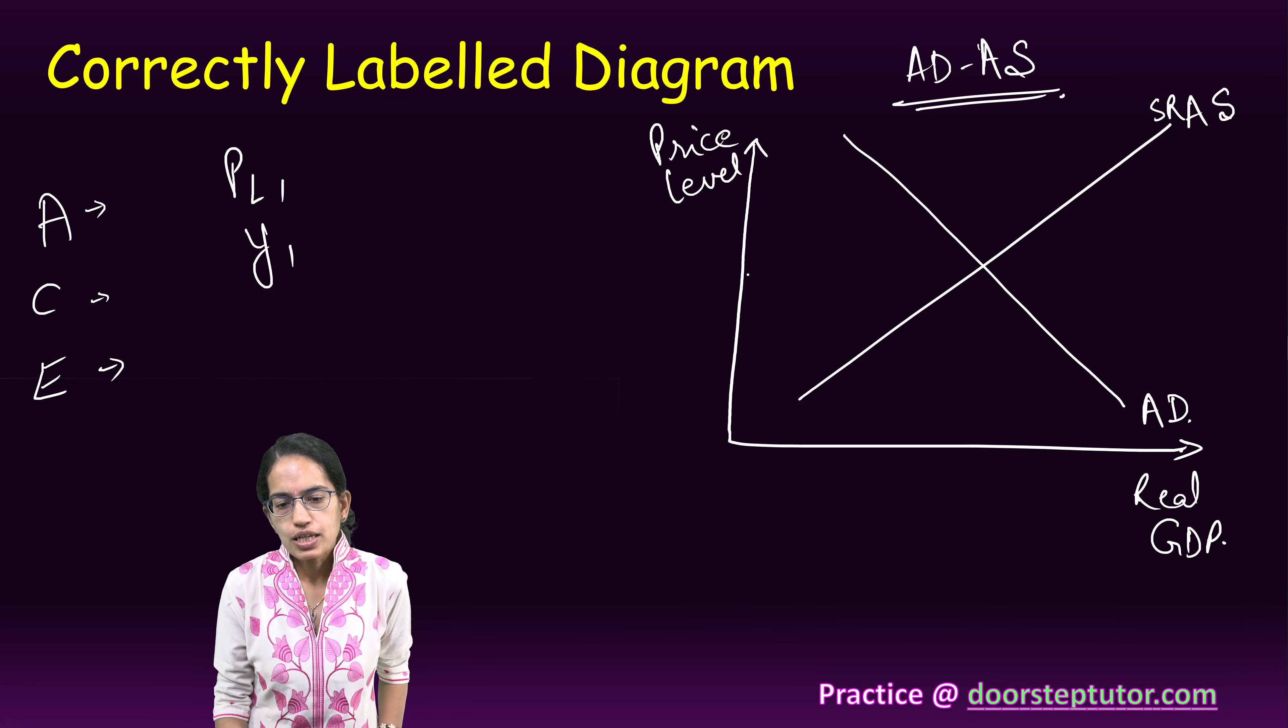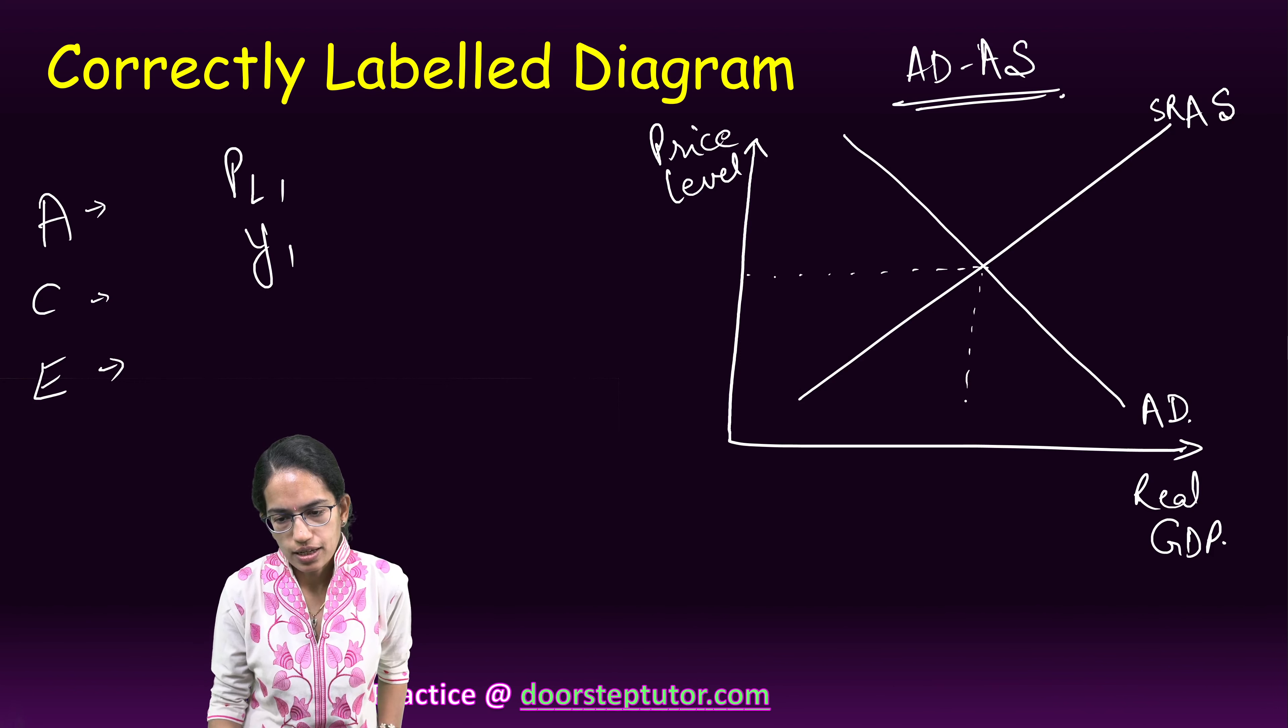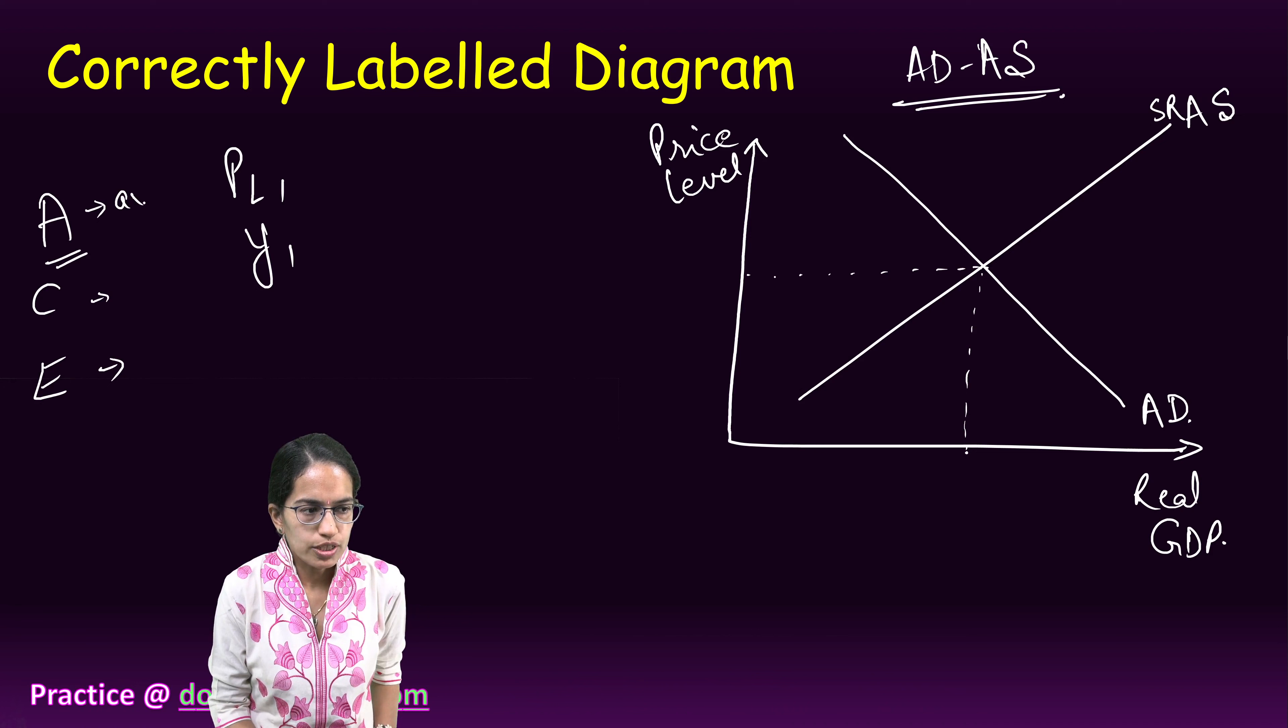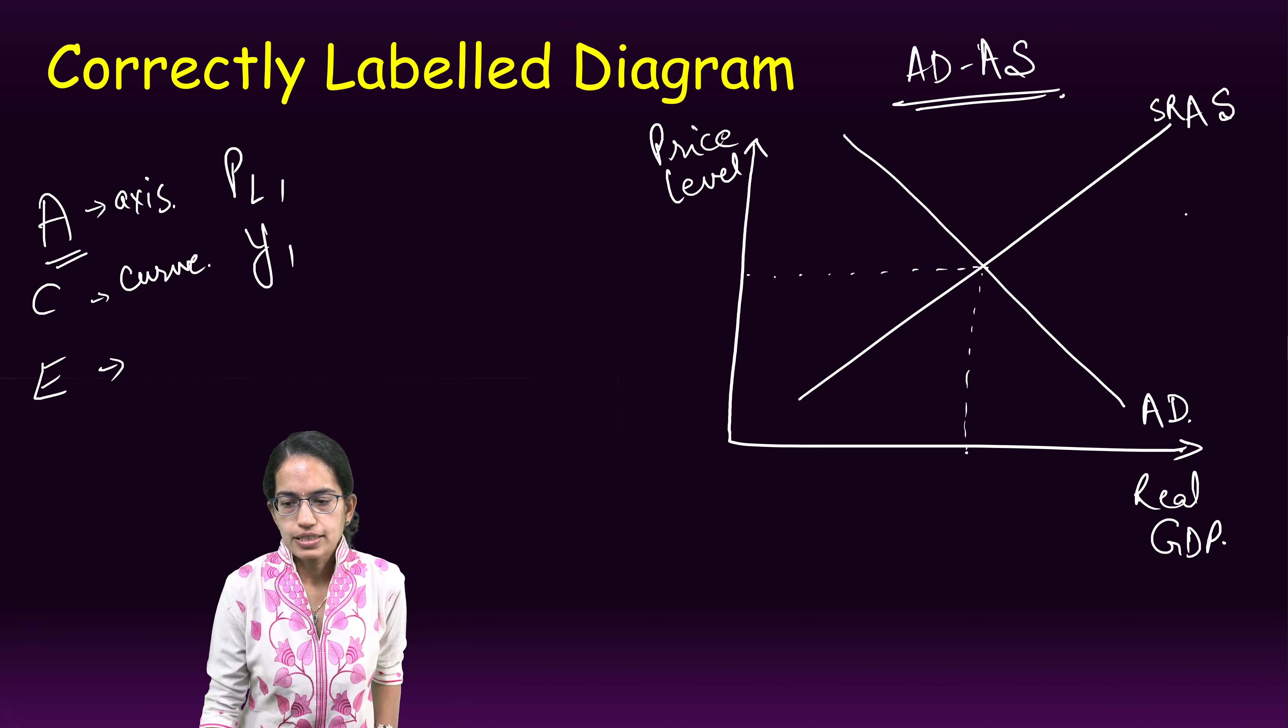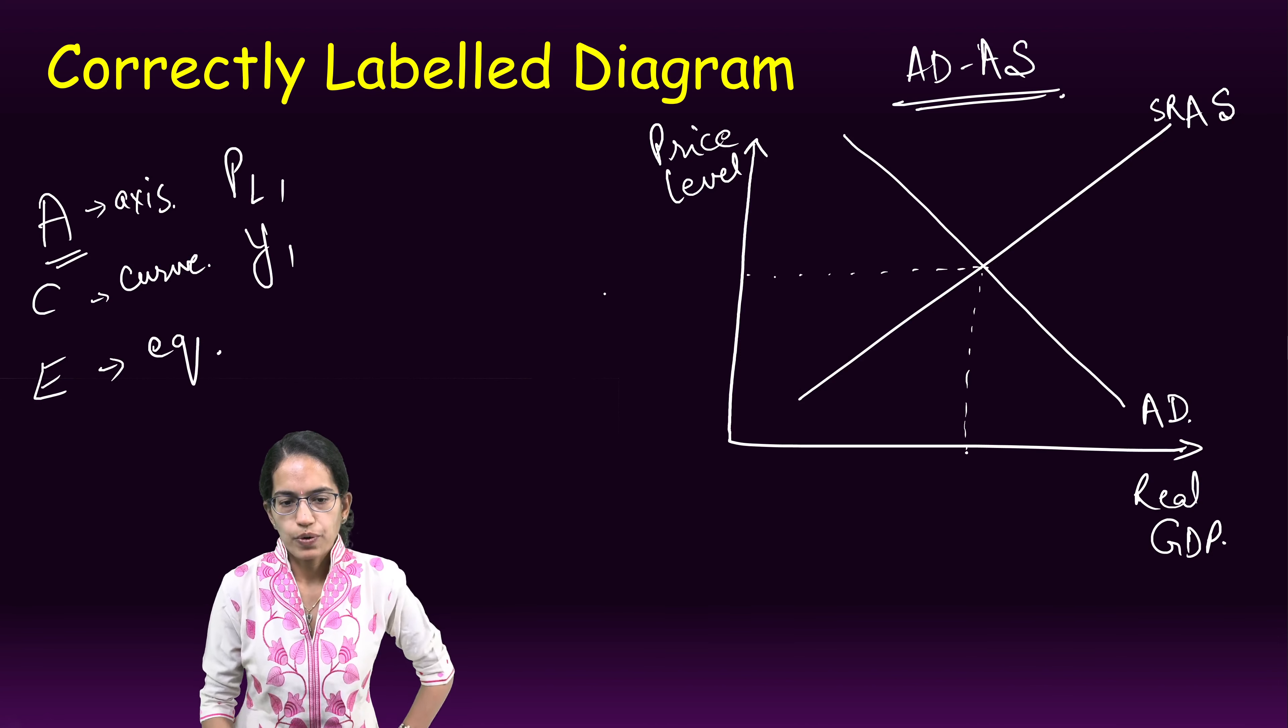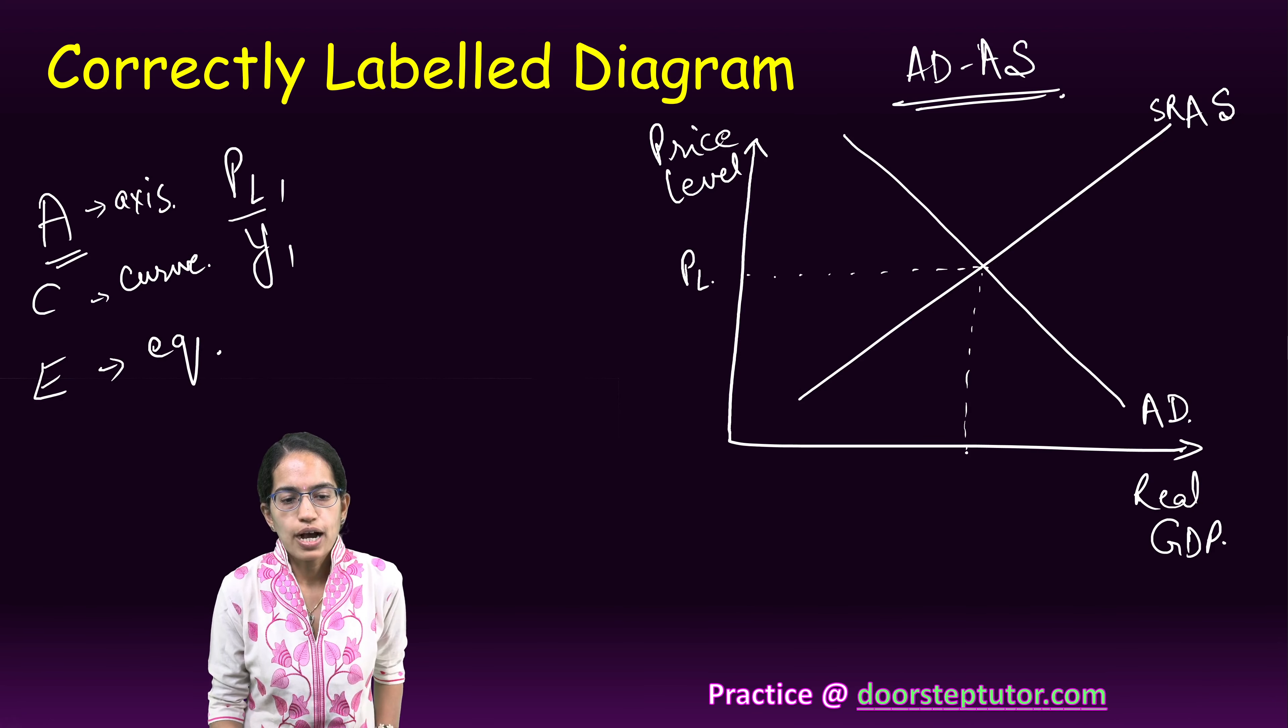The equilibrium point is again important. Under the ACE method, A is for the axis which we have drawn as x and y, C is for the curves which is the aggregate supply and the aggregate demand, and E is for the equilibrium point. This equilibrium point, as it was asked in the question, you have to mark PL1 for the price level and Y1 for the output level.